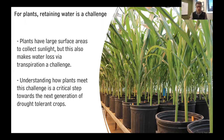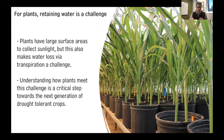Understanding how plants strike that balance or meet that challenge is a critical step towards the next generation of drought tolerant crops. If we can understand that, then perhaps we can modify that balance or modify those traits in crop species.